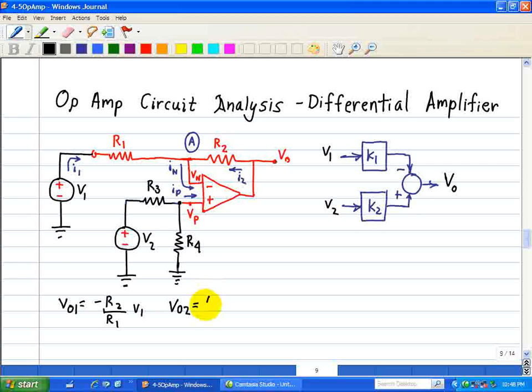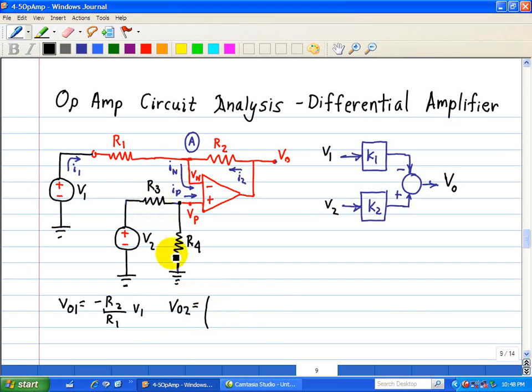So let's do the one associated with the voltage divider here, which is R4 over R3 plus R4. So that's due to V2. And then here, we have a gain of R2 over R1 plus 1.